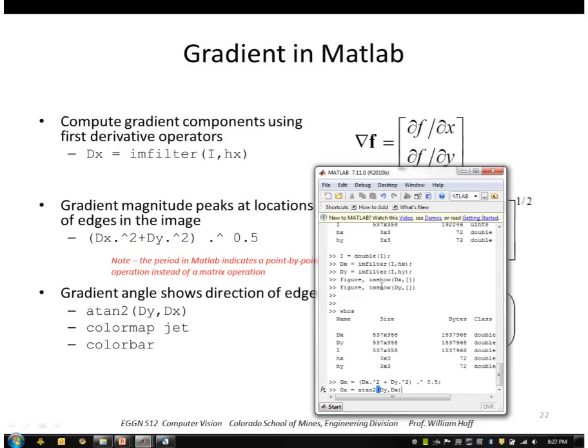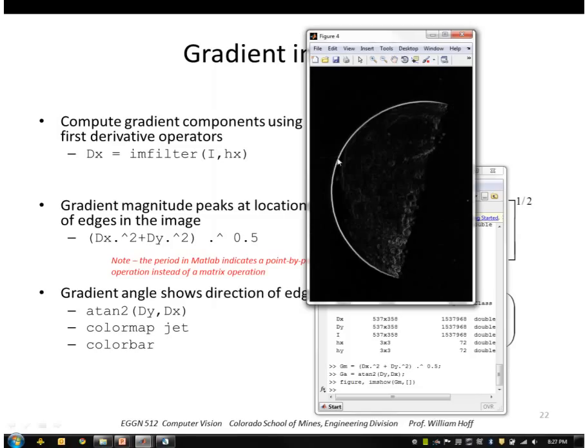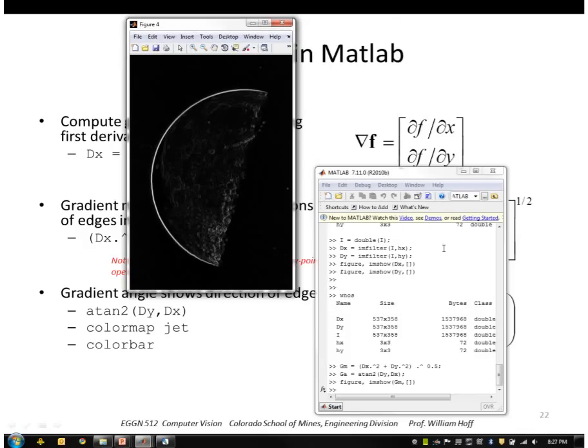Okay, so that's the gradient magnitude. So, it gives you a nice, strong response where I have an edge, step edge, which is all the way around the border of the moon.